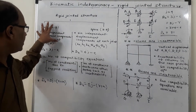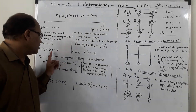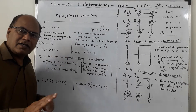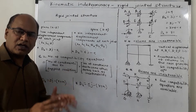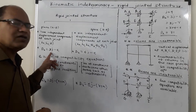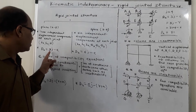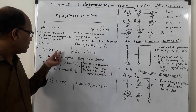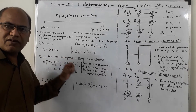In case of plane rigid jointed structures, dk is given as 3j minus e. If there are j number of joints, 3 independent displacement components are possible at each joint, so the total number of displacement components is equal to 3j. But there may be some constraints which will not allow displacement to happen, and those are given by e. So dk equals 3j minus e, where e is equal to the total number of constraints.